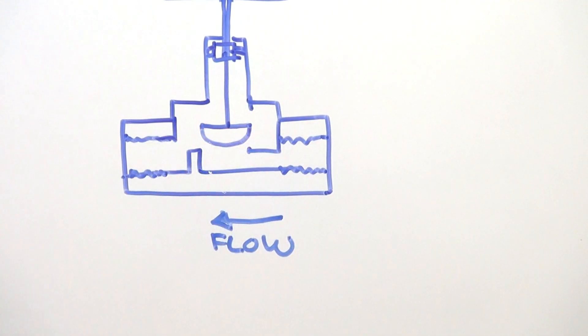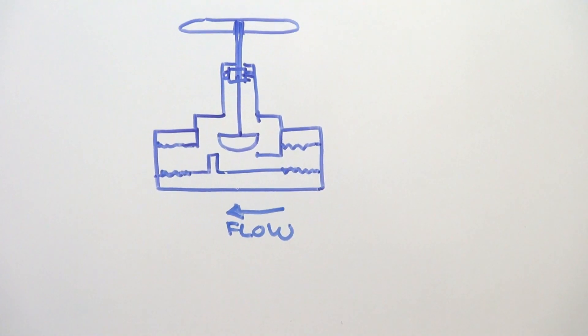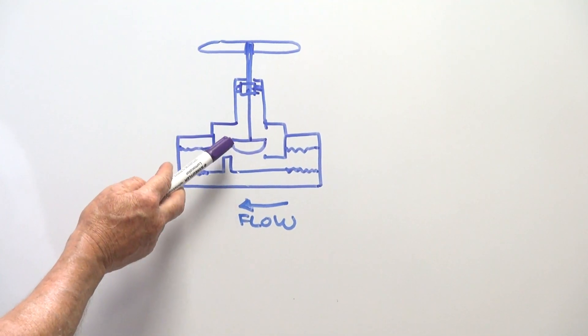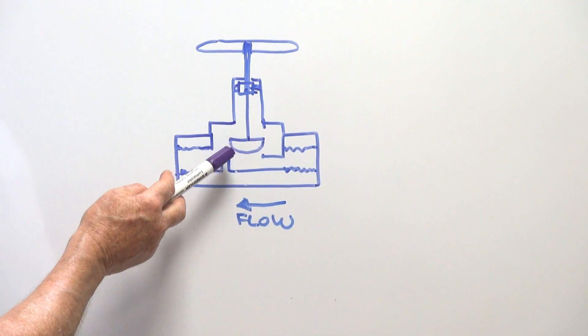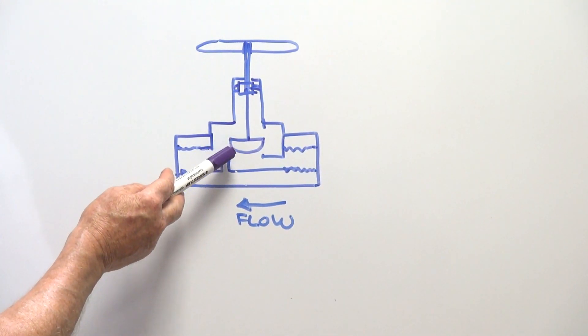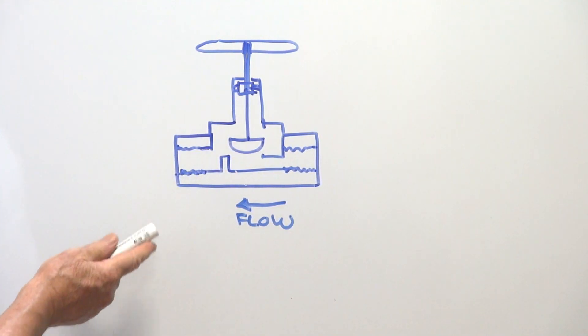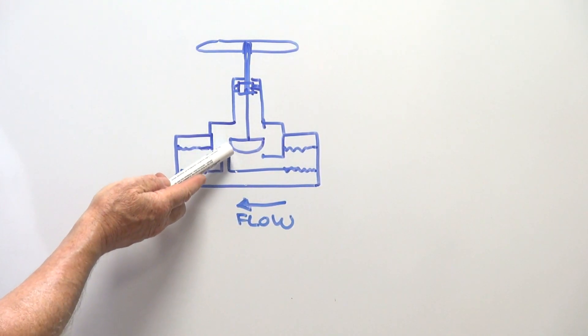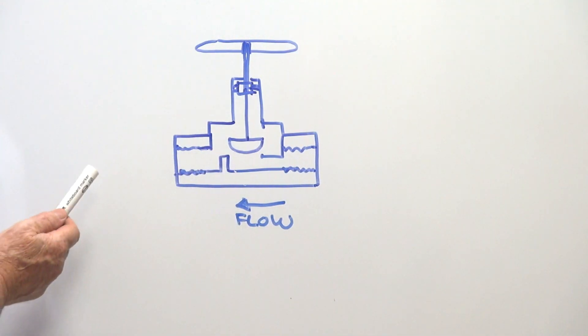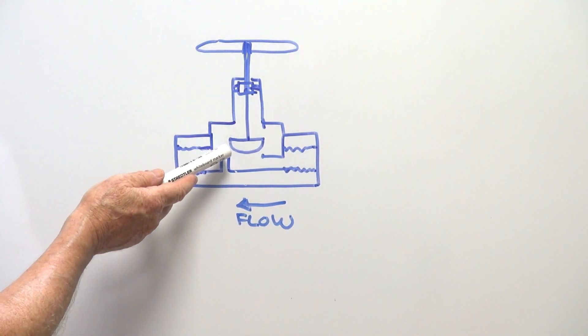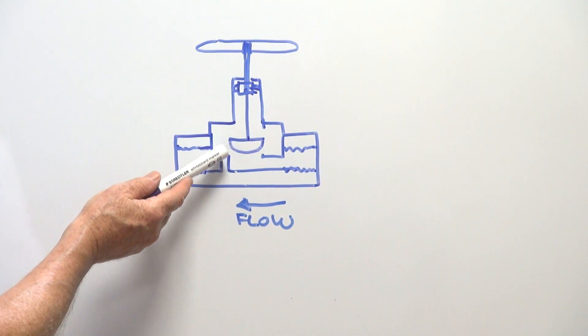I'll just show you on the sketch. The globe itself is like a slight part of a globe, it's slightly curved and the idea is that as it starts to move into the actual seat itself, it's giving a variable orifice. So a form of control, a bit more precision control, rather than just a flat seat that you get on other valves.